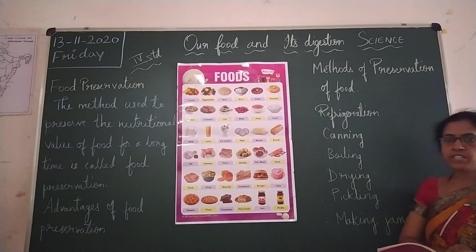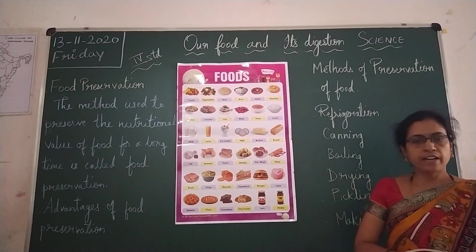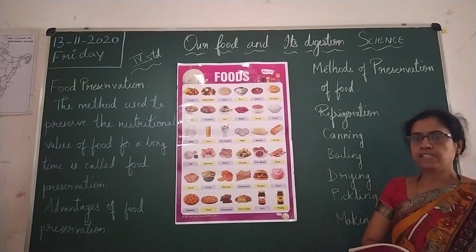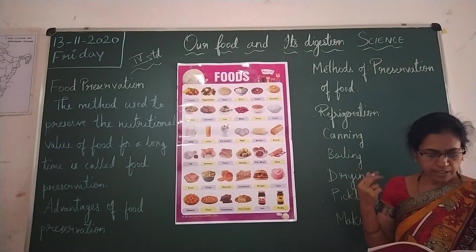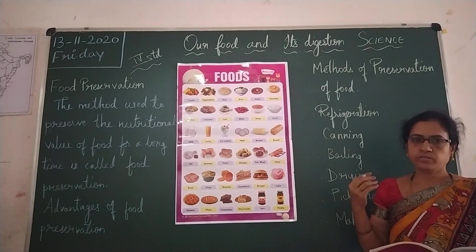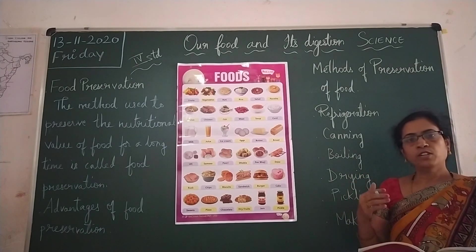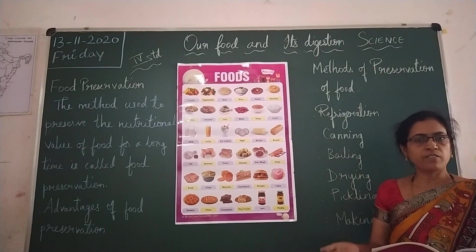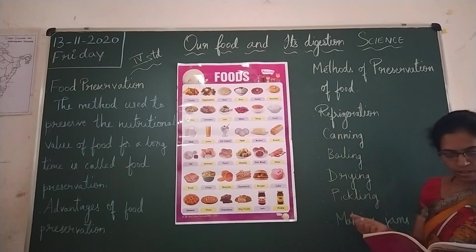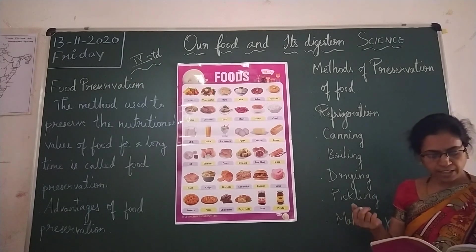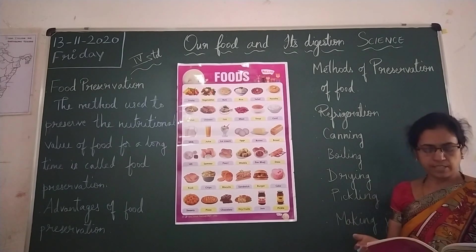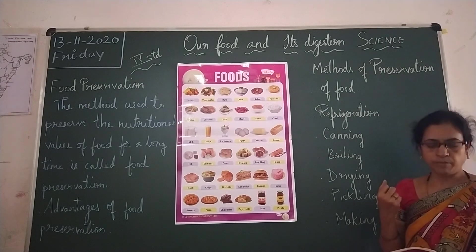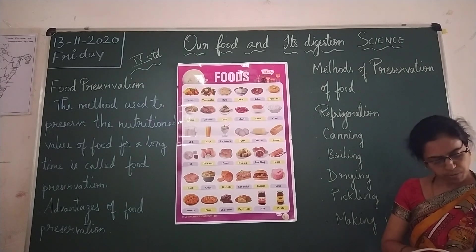Next is drying. Some vegetables like carrot, peas, and cauliflower are dried and preserved and are used off-season, when certain vegetables are not available. When food is dried, bacteria and other germs cannot grow because they do not get moisture. In this way, food can be saved from spoilage.